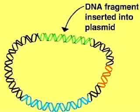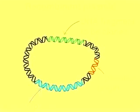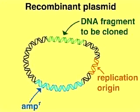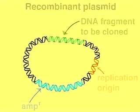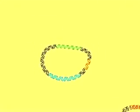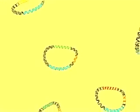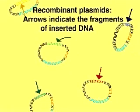Each of these recombinant plasmids contains the inserted DNA fragment, an ampicillin resistance gene, and a replication origin. A pool or library of circular recombinant plasmids is thus created. Each plasmid carries a unique fragment of foreign DNA, as indicated by the colored arrows.